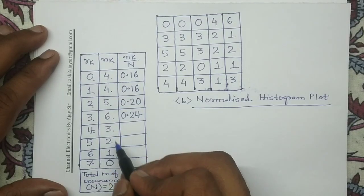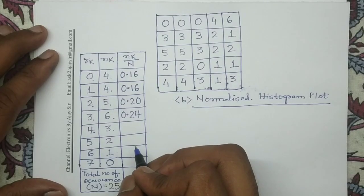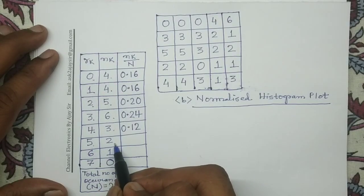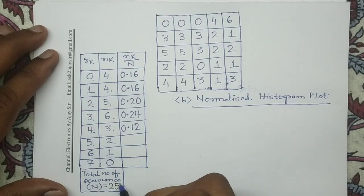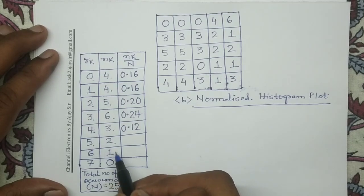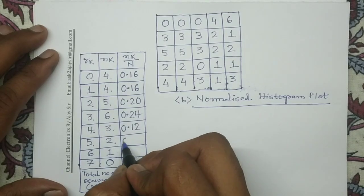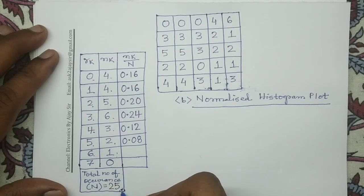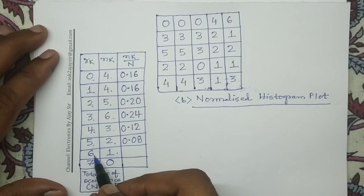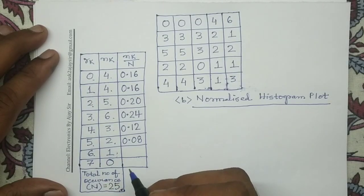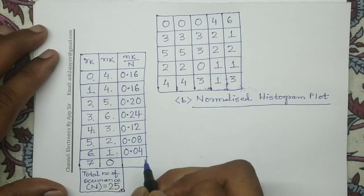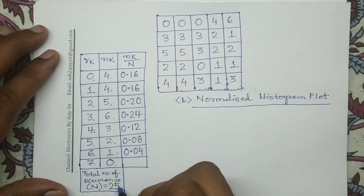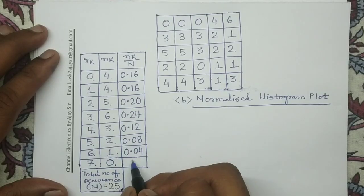For gray level 4, its number of occurrence is 3, total is 25, so probability is 3 divided by 25, equal to 0.12. For gray level 5, occurrence is 2, total is 25, probability is 2 divided by 25, equal to 0.08. For gray level 6, occurrence is 1, total is 25, probability is 1 divided by 25, equal to 0.04. For gray level 7, occurrence is 0, total is 25, probability is 0 divided by 25, equal to 0.